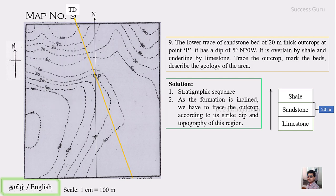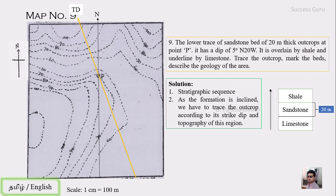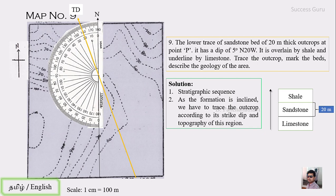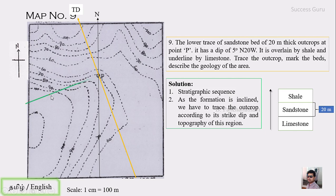After marking this point, draw a line and label it TD for true dip. The next step is to mark the strike direction. Since the difference between strike and dip is 90 degrees, we add 90 to 20 degrees to get 110 degrees. We place a point there — this is the strike direction.